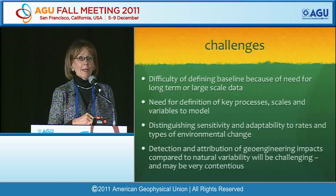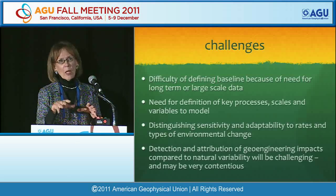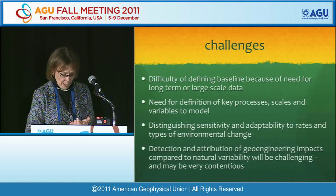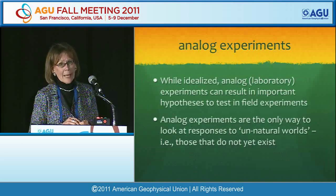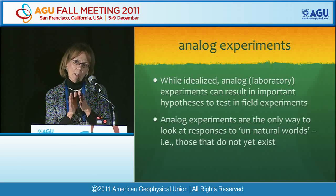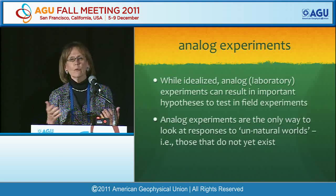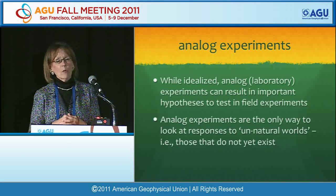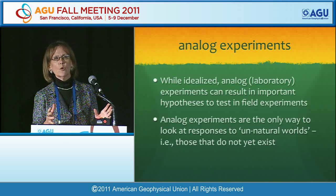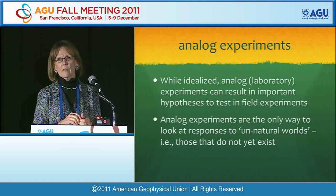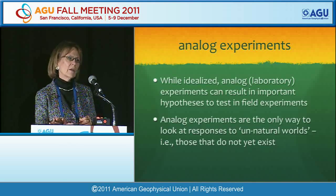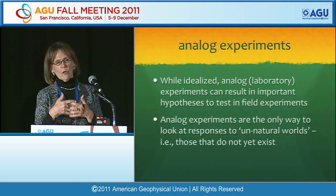Detection and attribution questions will be very challenging and may be contentious. Analog experiments or laboratory experiments, while idealized, are really important for directing the sorts of hypotheses we want to look at when we come to field experimentation. They're also the only way to look at several no-analog or unnatural world situations. This has been a view of how another community — the ecological community — looks at the whole space of geoengineering.